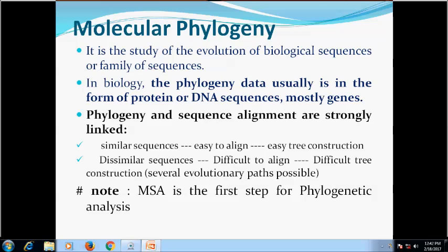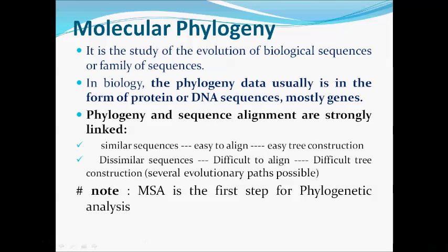Conversely, distantly related sequences are difficult to align, and the phylogeny of very different sequences is also very difficult, as several evolutionary paths are possible. A key point to note is that multiple sequence alignment (MSA) is the first step for phylogeny analysis, and each column of an MSA represents a site that has been evolving independently of all other sites.